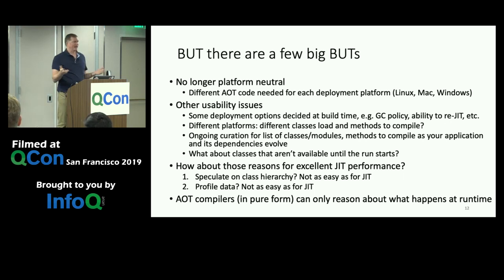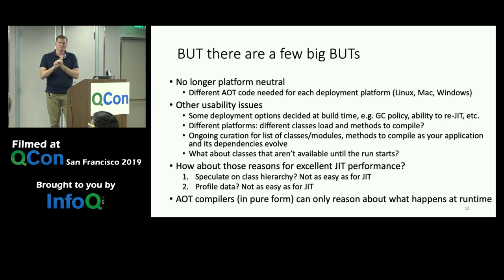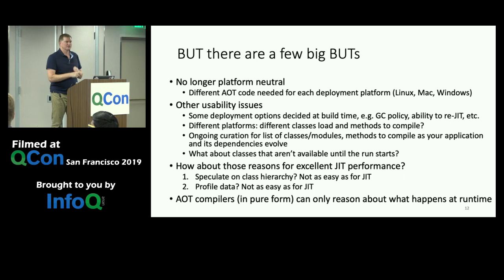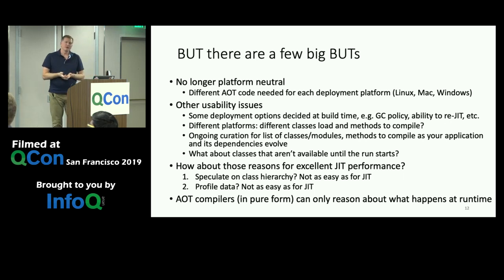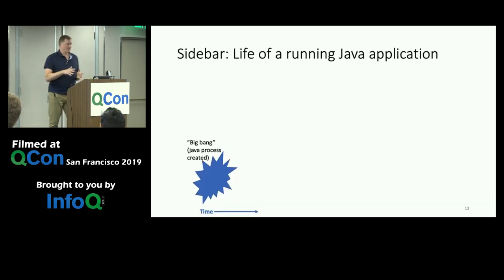Looking back at the two reasons JIT compilers deliver excellent performance — speculating on class hierarchy and profile data — AOT has none of those. It can't speculate because it doesn't know which classes have been loaded, since it hasn't run yet. AOT compilers in their pure form have to reason about things happening at runtime without being at runtime.